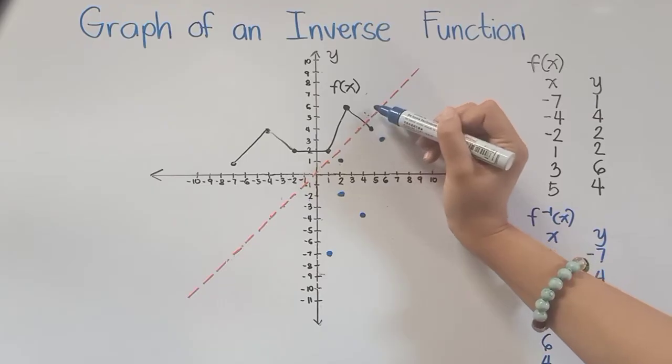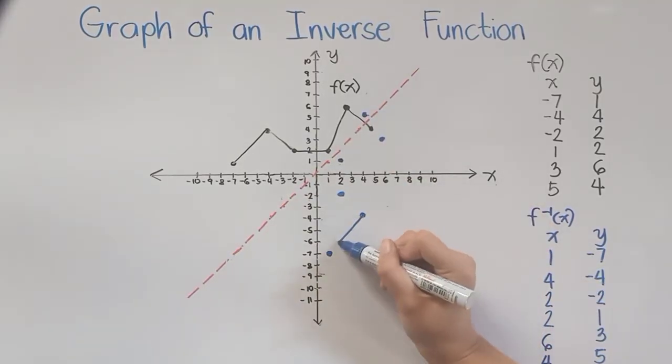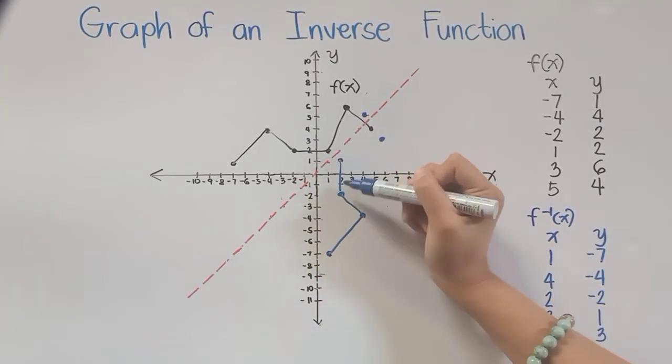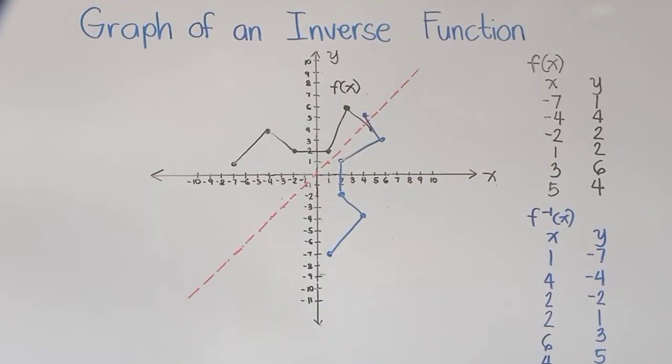So basically, we just interchange our x and y values. Now the next thing to do is to connect all of the points here. Now you can see here that the graph of our inverse function is actually the reflection of our given function. Basically, the domain or the x values and the range or the y values of the original function and the inverse function were simply interchanged, making their graphs reflection of each other from this reflection line x equals y.